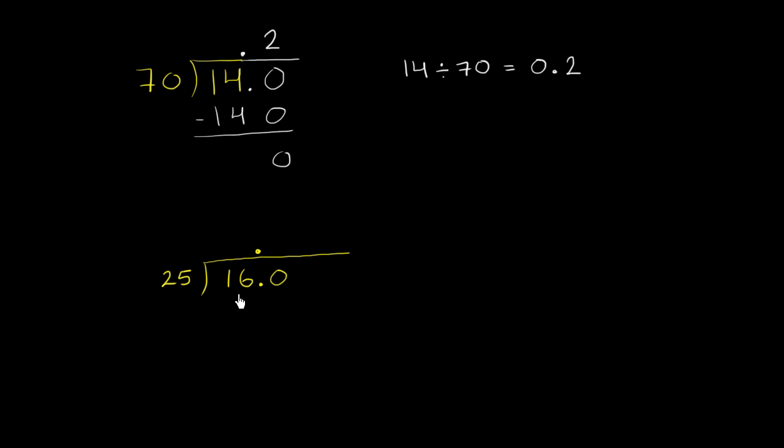So let's see, 25 times 4 is 100. 25 times 6 is 150. So that looks right. So it goes 6 times. 6 times 25 is 120 plus 30, which is 150. And now we can subtract. And 160 minus 150 is 10.